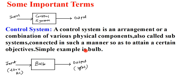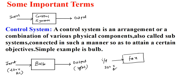A simple example of a control system is a bulb. The input given to the bulb is a 230 volt AC supply, and the output of the bulb is light. Similarly, for a fan, the input is 230 volt AC and the output we get is wind. So now you can understand what a control system is using these simple examples.